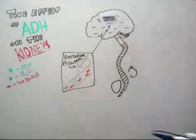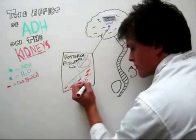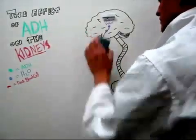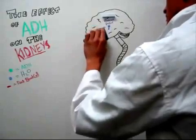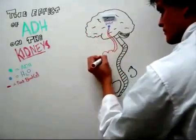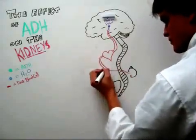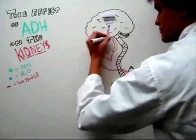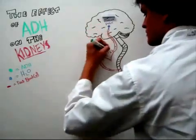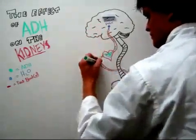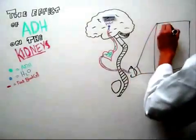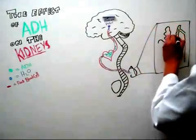It injects or secretes ADH into the blood vessels. The anti-diuretic hormone then travels through the bloodstream and is pumped around the body until it reaches the kidneys. Once it reaches the kidneys, it goes to the nephrons.